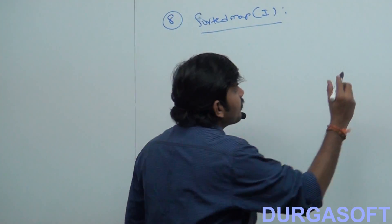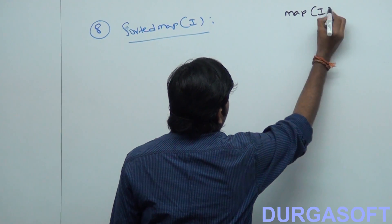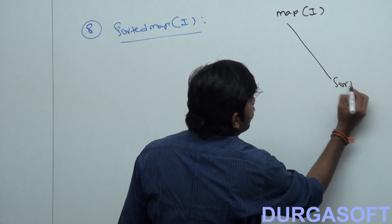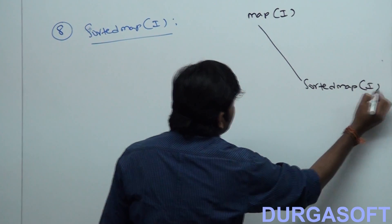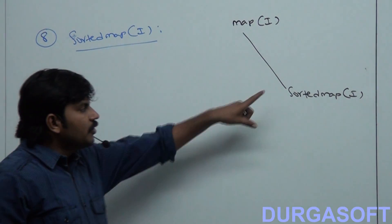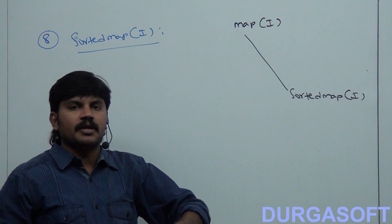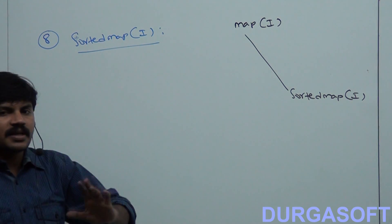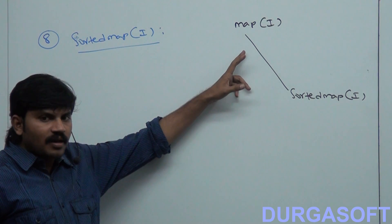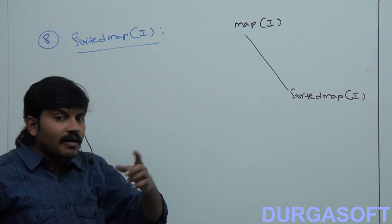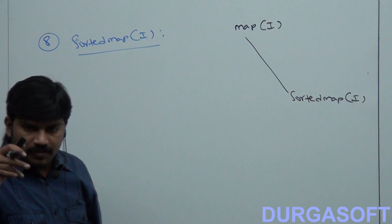Sorted Map is the child interface of Map. When we should go for Sorted Map? If you want to represent a group of objects as key-value pairs according to some sorting order of keys, then we should go for Sorted Map.